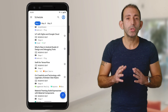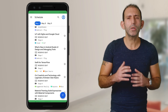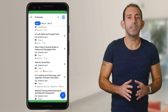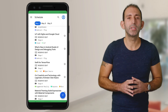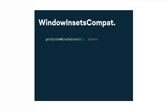This is where window insets come to the rescue. Insets tell you where the system UI appears on top of your content. They also tell you the screen regions where system gestures take priority over in-app gestures. Insets are represented by the WindowInsets class, and WindowInsetsCompat in AndroidX. Before we focus on the newly added gesture insets, let's do a quick recap of the system insets.